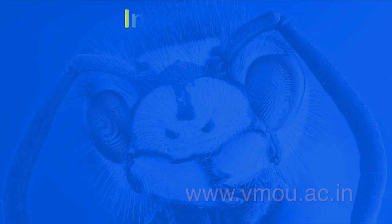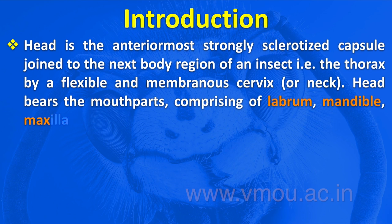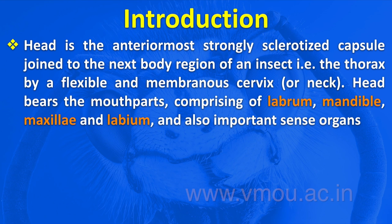The head is the anterior-most strongly sclerotized capsule joined to the next body region of an insect — that is, the thorax — by a flexible and membranous cervix or neck. The head bears mouth parts comprising labrum, mandible, maxilla, and labium.